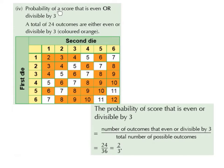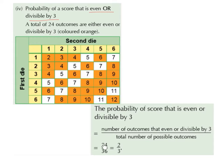Part 4: the probability of a score that is even or divisible by 3. A total of 24 outcomes are either even or divisible by 3, coloured in orange. So 2 is an even number, 4 is even, 6 is even, 8 is even, 10 is even, and 12 is even. Counting all the orange numbers, we come up with 24 in total. So the probability is 24 divided by 36, which is 2 over 3.